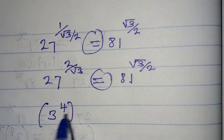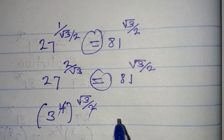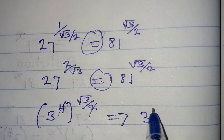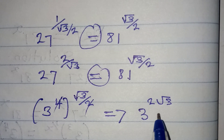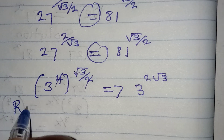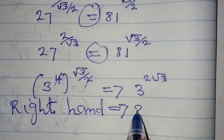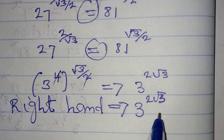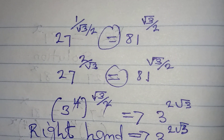Multiplying the exponents 4 and root 3 over 2, the 4 and 2 simplify to give us 2 root 3. So the right-hand side simplifies to 3 to the power of 2 root 3.